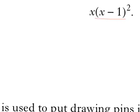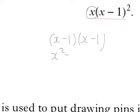So I'm going to take care of, first of all, x minus 1 all squared, and whatever answer I get for that, I'm going to multiply by x. So x minus 1 all squared is a repetition of the bracket x minus 1, so it's x minus 1 bracket x minus 1. That's x squared minus 2x plus 1.